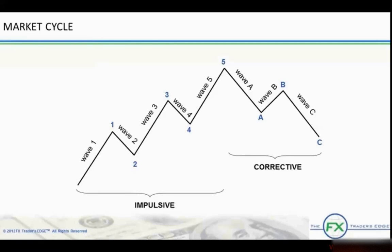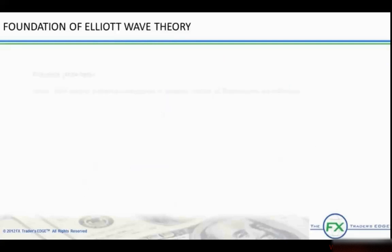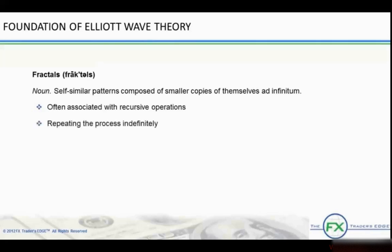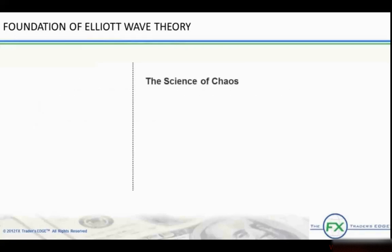This type of movement also creates the necessary environment for progress in either an upward or downward direction. Fractals are self-similar patterns composed of smaller copies of themselves ad infinitum. It is often associated with recursive operations on shapes or sets of numbers in which the result of the operation is used as the input to the same operation, repeating the process indefinitely. The science of chaos, and specifically fractal analysis, became popular fifty years after Elliott concluded that the progress of the market was fractal in nature by discerning patterns that are repetitive in form.